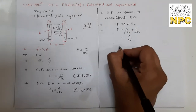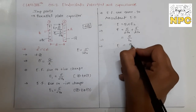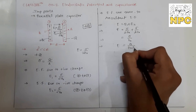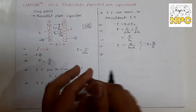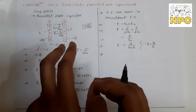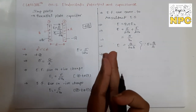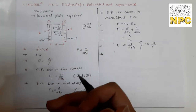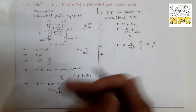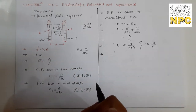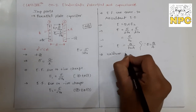Since the electric field is constant and uniform between the plates, we can use the relation between electric field and potential. When E is uniform, V = E × d, where d is the separation between the plates. The electric field inside is uniform, so the potential difference is simply V = E·d.